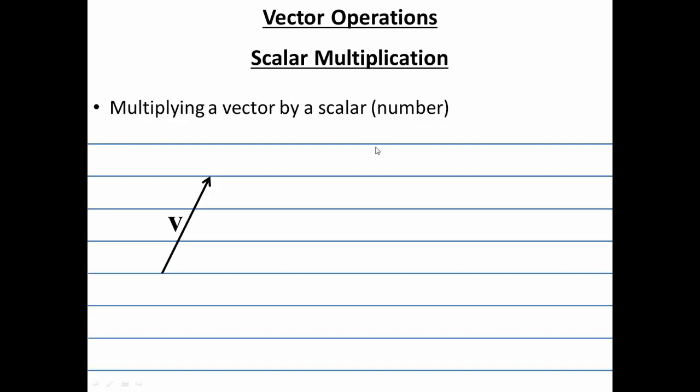So if I were to take vector v right here and multiply it times a scalar, remember that a scalar has only magnitude. So by multiplying a vector times a scalar, you don't affect the direction of the vector, you only affect the magnitude of the vector. In other words, you affect the length.